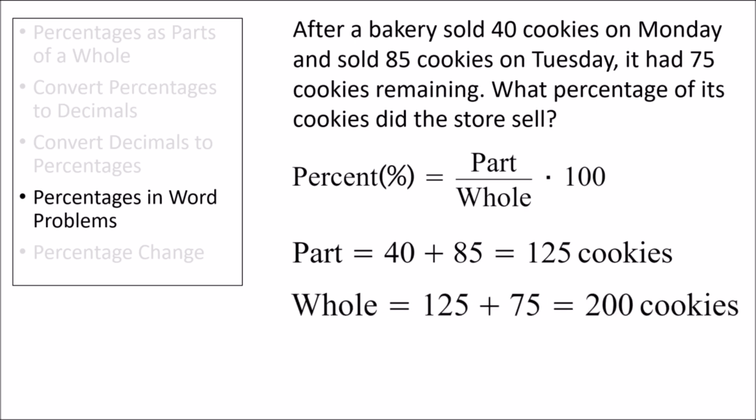For the value of whole in the percent formula, we need to know the total cookies the store had at the beginning. Here, we can add together the cookies sold by the store, which is 125 cookies, and the cookies not sold by the store, which is 75 cookies. This gives us 200 cookies for the value of whole.